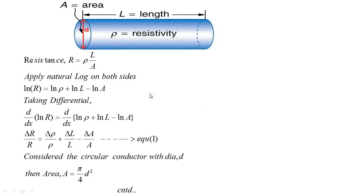This equation for the gauge factor can be derived as follows. We consider a circular conductor having length L, area A, diameter D, and resistivity ρ. Applying the natural log on both sides and then taking the differential on both sides, we finally get: δR/R = δρ/ρ + δL/L − δA/A. This is considered as equation 1.